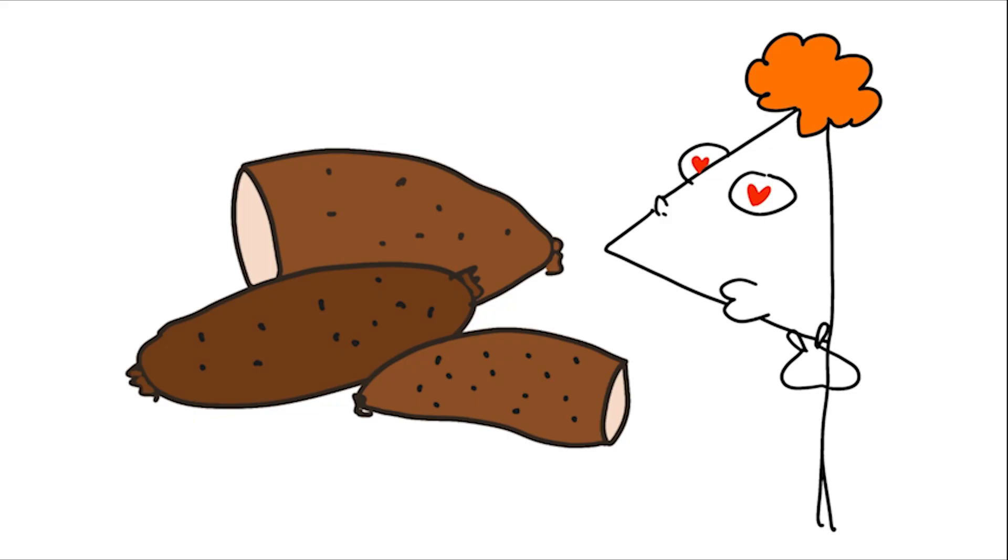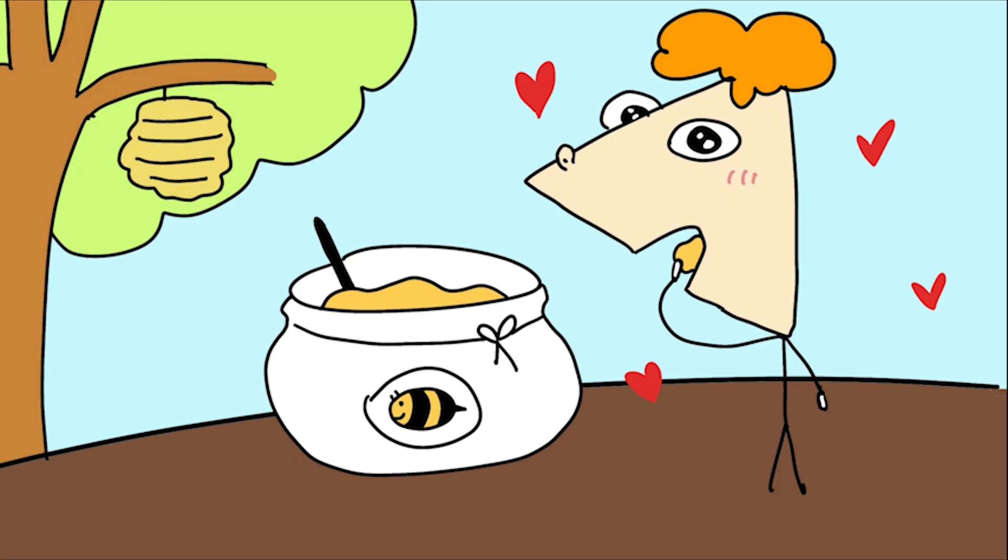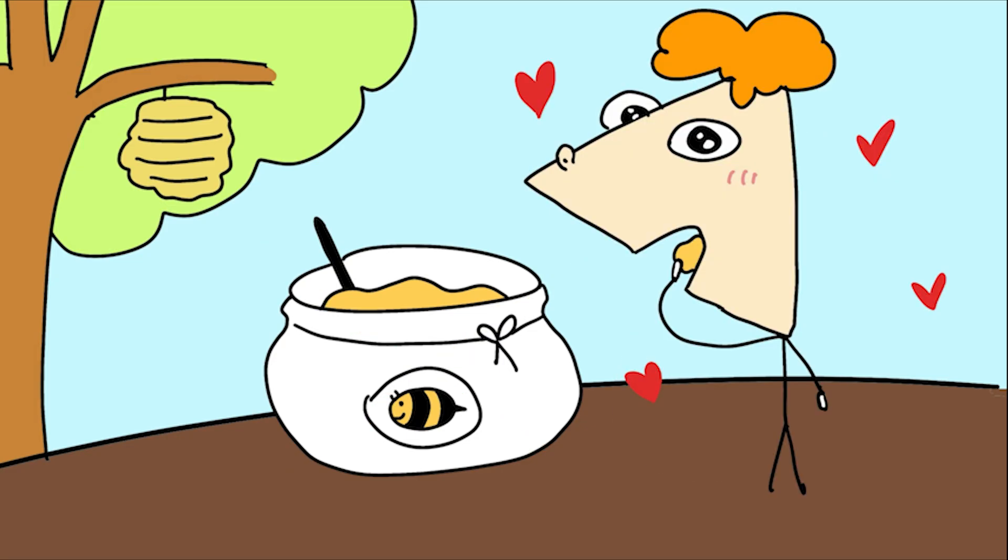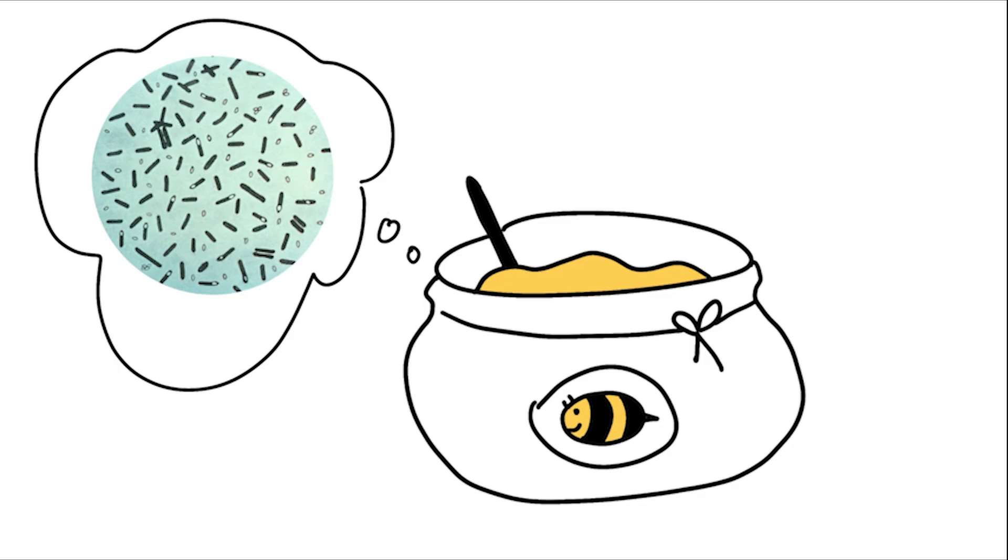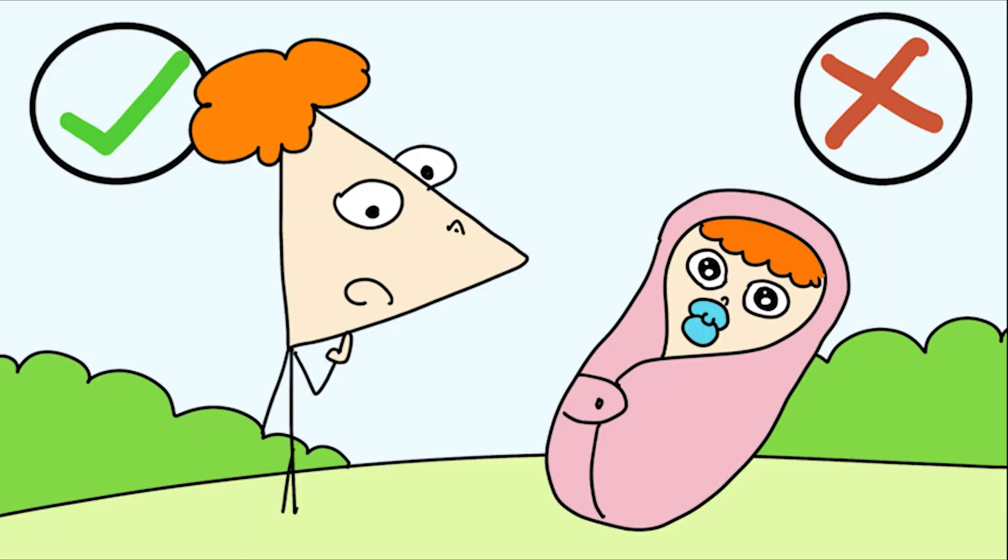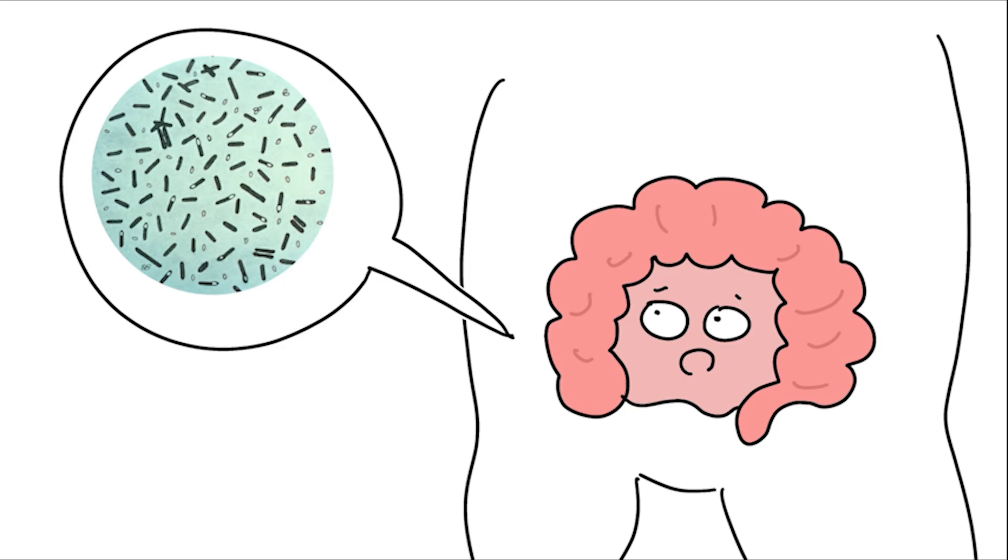Handle it like a potentially toxic food source. Honey, sweet but dangerous for babies. Honey is sweet but can be extremely dangerous for infants. Honey can contain spores of the bacterium Clostridium botulinum. Adults are fine because good bacteria keep it in check, but babies under one year are not. These spores grow in an infant's intestines and produce toxin.